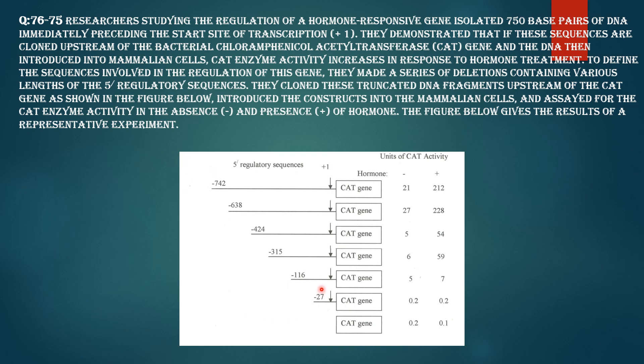Of the 5' regulatory sequences, they cloned these truncated DNA fragments upstream of the CAT gene as shown in the figure below. Introduced these constructs to the mammalian cells, assayed for the CAT enzyme activity in absence and presence of the hormone. This is the photograph. Let us see what are all the questions here.